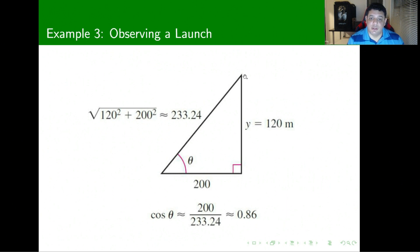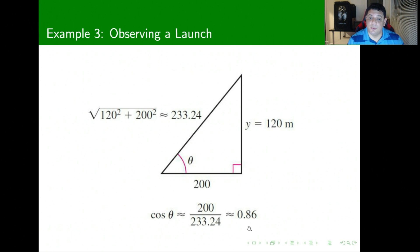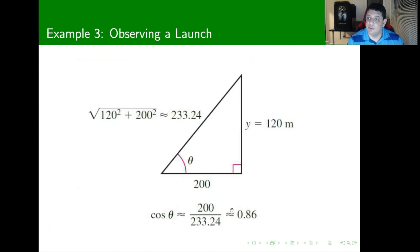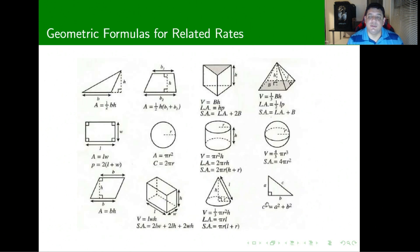With y = 120, we can find the hypotenuse of the triangle, which is 233.24. From this, cosine of theta equals adjacent over hypotenuse, giving cosine of theta equals 0.86. With that, we can finally compute the last step and find the rate of change of theta with respect to time.